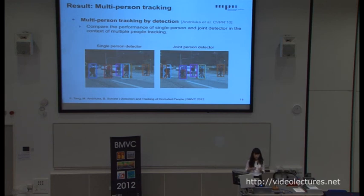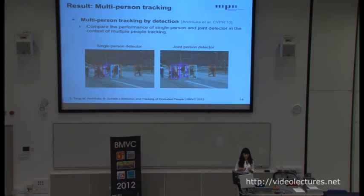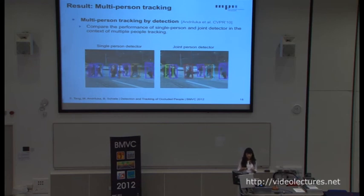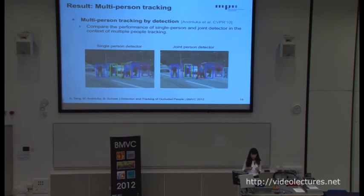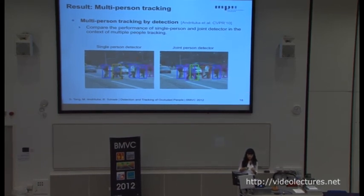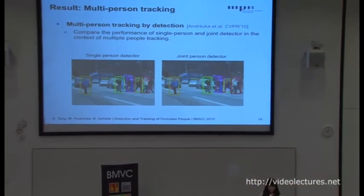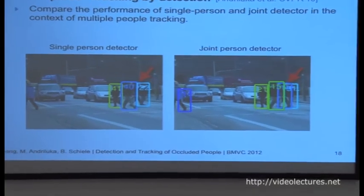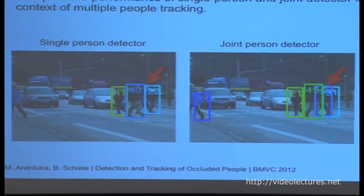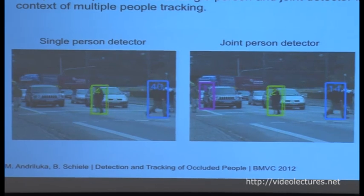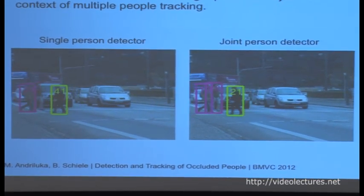Finally, we compare the performance of the single person detector and the joint person detector in the context of multiple people tracking. The tracker based on the single person detector cannot track people when they are under heavy occlusions. But the tracker based on the joint person detector can track people even in very complicated cases — for example, three people occluding each other. This shows the potential of our joint person detector as a building block for the multiple people tracking-by-detection approach.